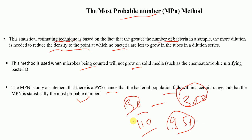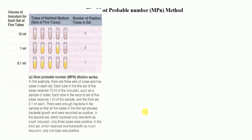This method provides only an estimation. To demonstrate how it works: we have 3 sets of 5 tubes each. In set 1 we inoculate 10 ml of the sample, in set 2 we inoculate 1 ml, and in set 3 we inoculate 0.1 ml. Then we determine the number of positive tubes: set 1 has 5 tubes positive, set 2 has 3 tubes positive, and set 3 has 1 tube positive. So the order is 5, 3, 1.